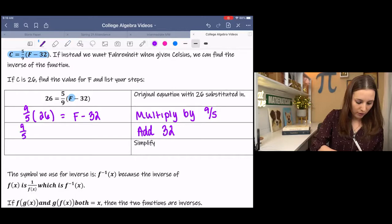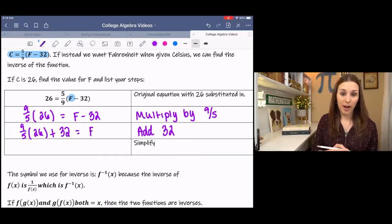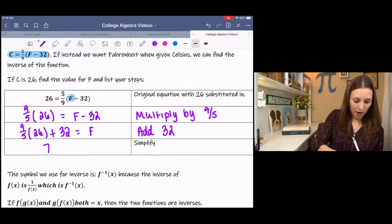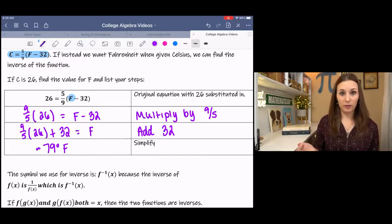We have nine-fifths times 26 plus 32 equals Fahrenheit. Then simplify, and it comes out to be about 79 degrees Fahrenheit. So 26 degrees Celsius is 79 degrees Fahrenheit.